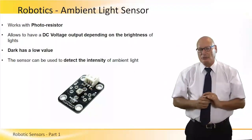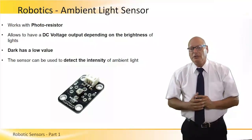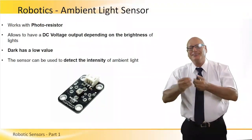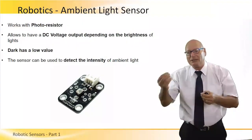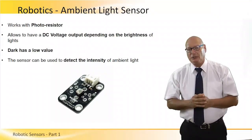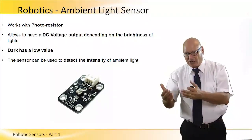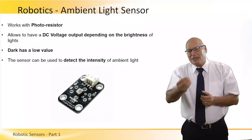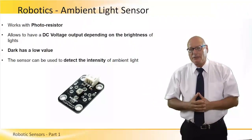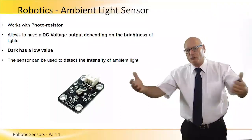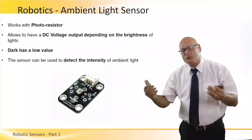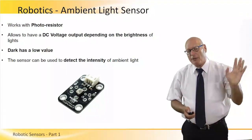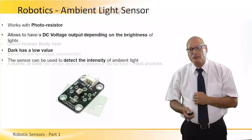Ambient light sensor — very simple. It works with a photoresistor, allowing a DC voltage output depending on the brightness of the light. It is calibrated such that dark has a low value and it detects the intensity of ambient light. Very important in manufacturing, warehousing, logistics, and assembly.